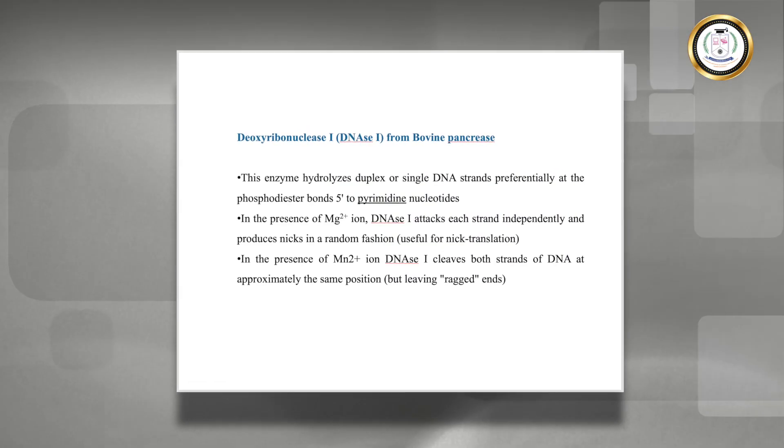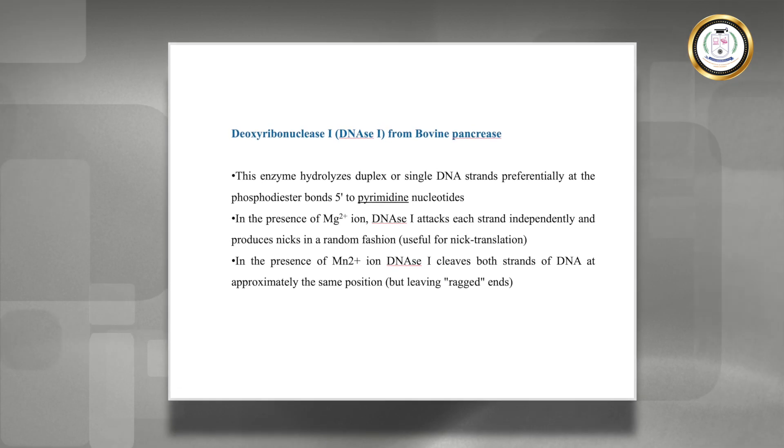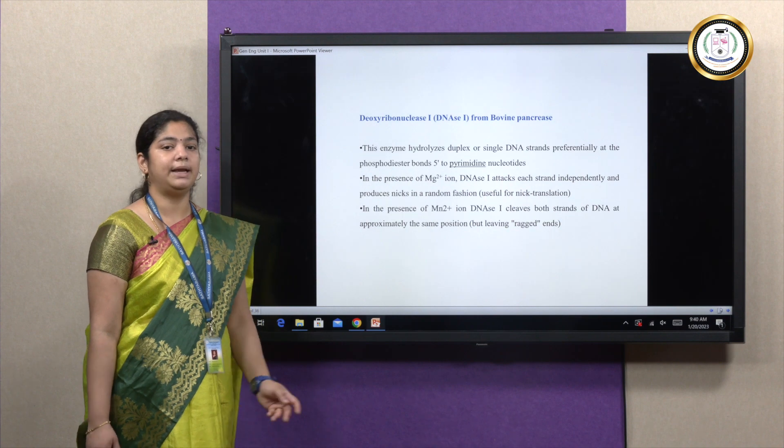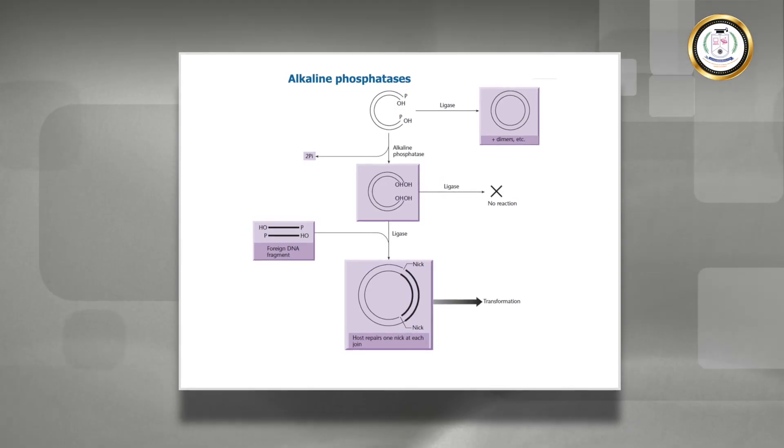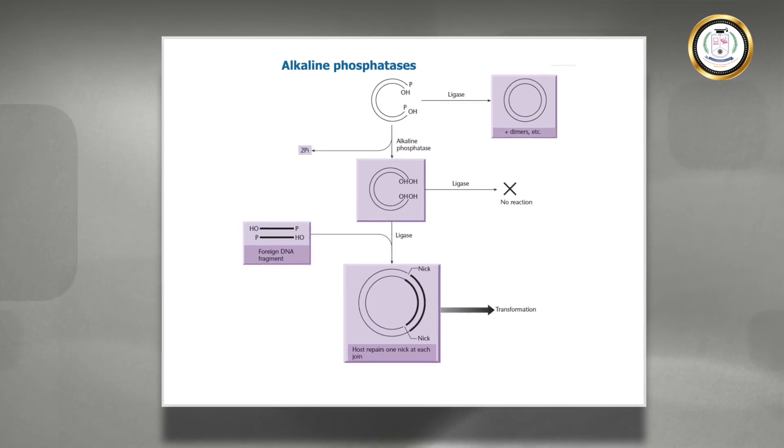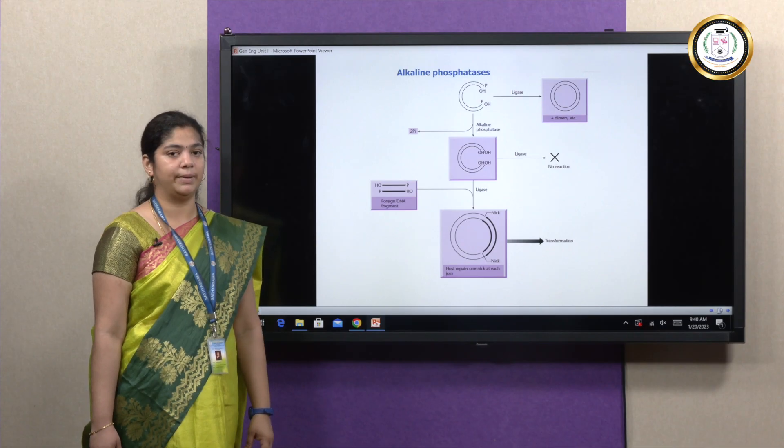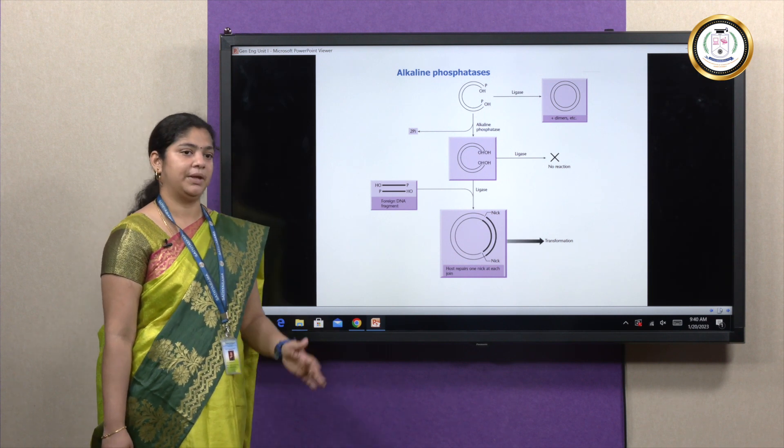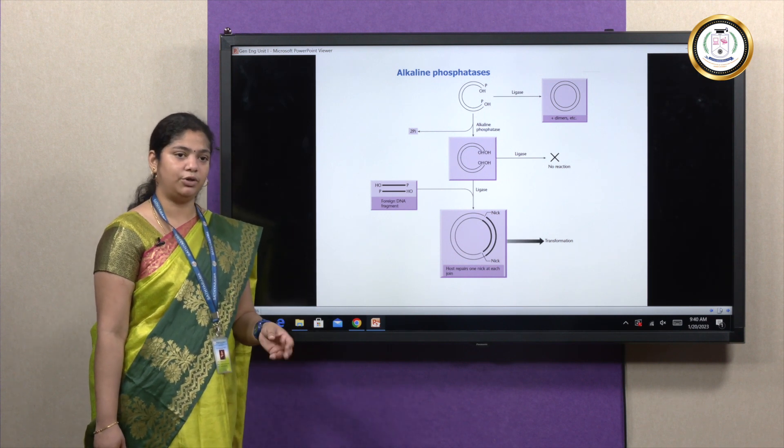In case of DNases, it cleaves single-stranded DNA and is generally used in case of many other molecular techniques. You can see alkaline phosphatase, which is a very important enzyme that is used in performing recombinant DNA technology. When a plasmid is cut post the restriction enzyme cut, you have an overhang.